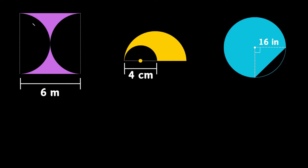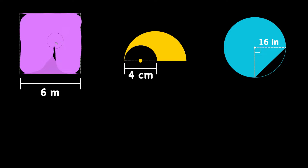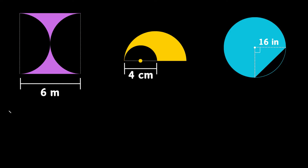The way I like to envision these is to always find the total area of the shape first. So let's pretend nothing is cut out and the semi-circles are filled in. This is a square, so if this side is 6 meters, we can assume this side is also 6 meters. The total area is just 6 times 6, which equals 36 meters squared.